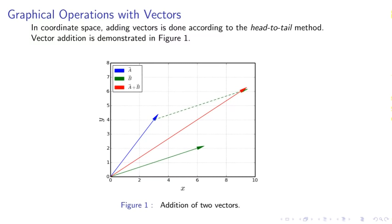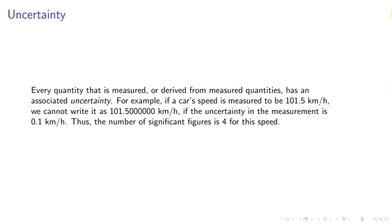Graphical operations with vectors. In coordinate space, adding vectors is done according to the head-to-tail method. Vector addition is demonstrated in Figure 1. We have a vector A, which is blue, and a vector B, which is green. So we put the head of vector B at the tail of vector A, and we graphically add to get the red vector.